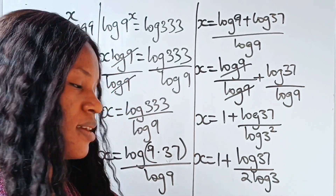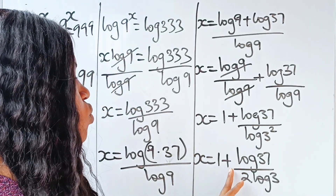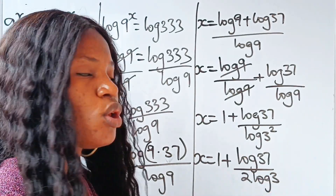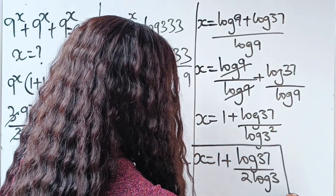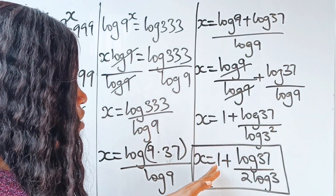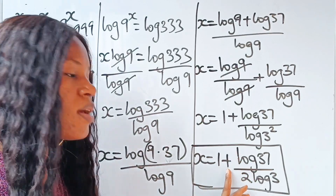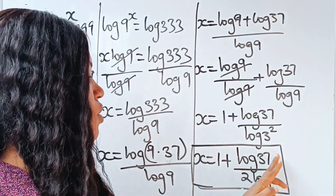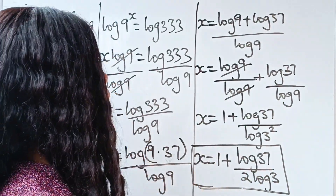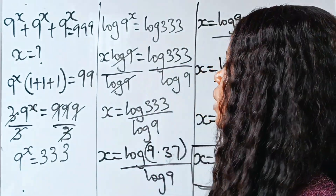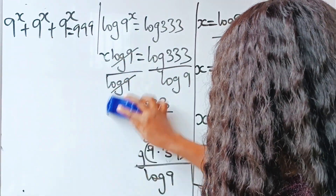So our answer is x = 1 + log 37 / (2 log 3). You can simplify this further by factoring out one-half, but we'll stop here — this form is correct. Now let's prove that what we got is right.